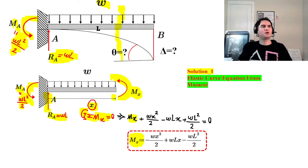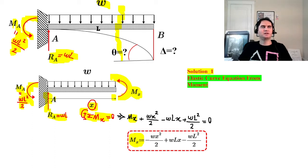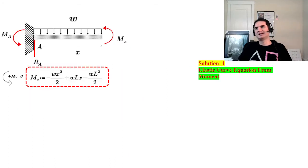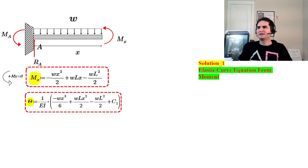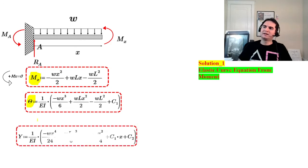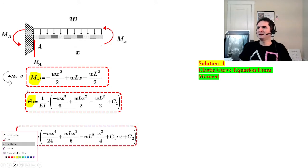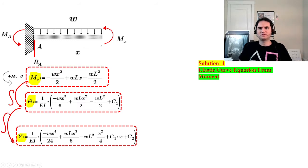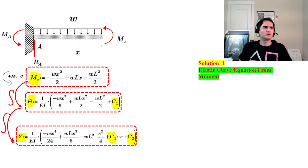Once we have the moment equation, integrating once gives us the slope or theta equation, and integrating a second time gives us the elastic curve delta. Each integration introduces a new constant: C1 from the first integration and C2 from the second integration.